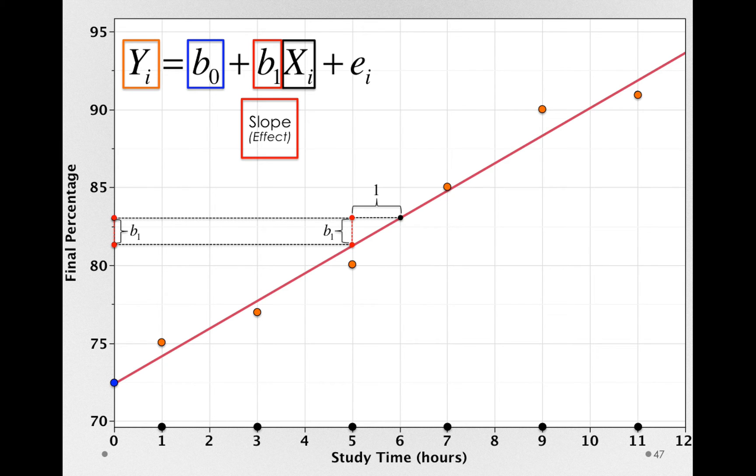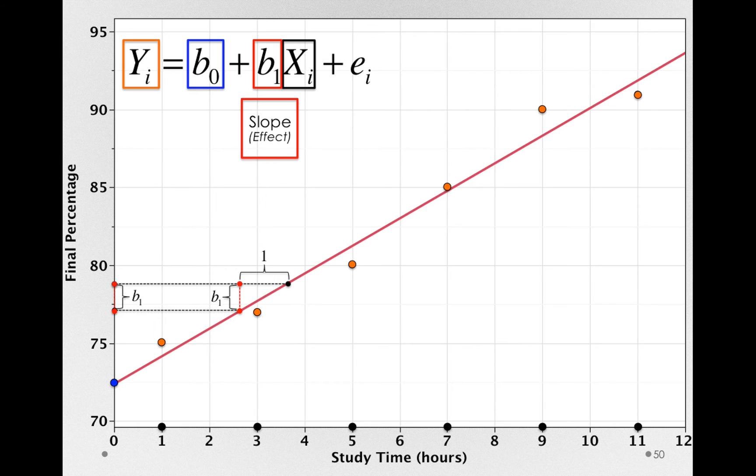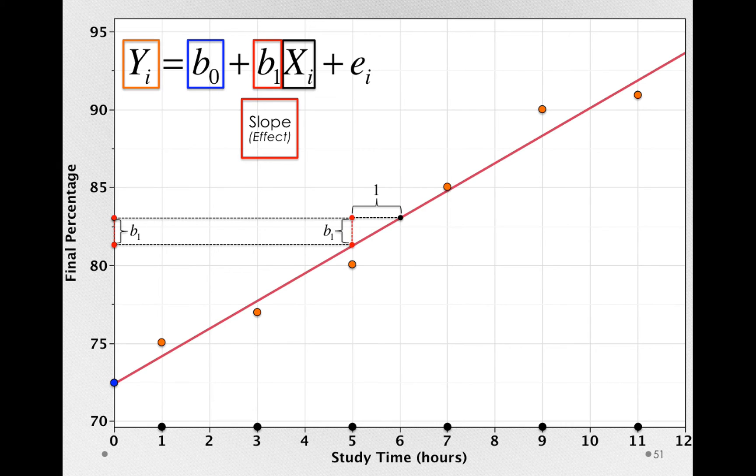Also notice that the effect of our variable is the same no matter where we are on the x-axis. That's what it means for this model to be linear. The effect is to increase b1 for every 1 unit of x no matter where on x we are. That's why this line doesn't curve.